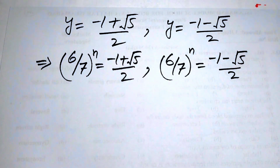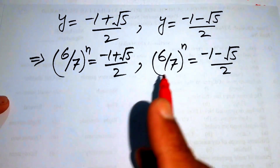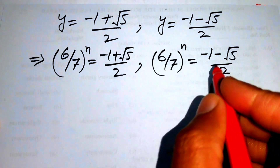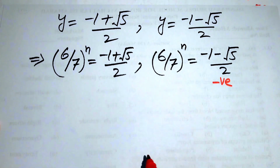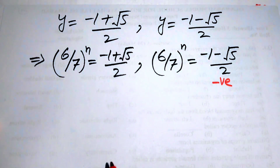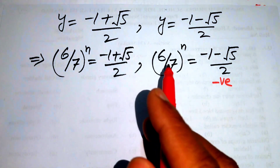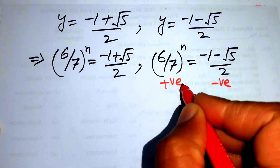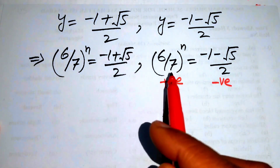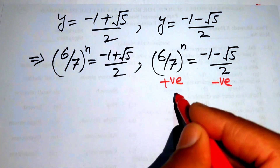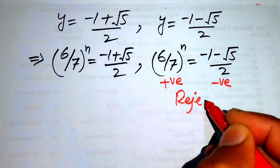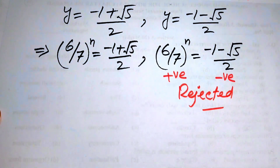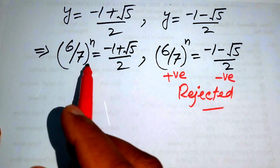In the second case, the right-hand side is negative. However, an exponential function always produces a positive value, so it cannot equal a negative number. We therefore reject this case and proceed with only the positive case.